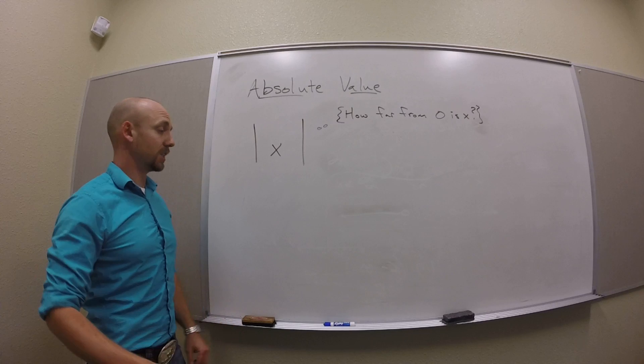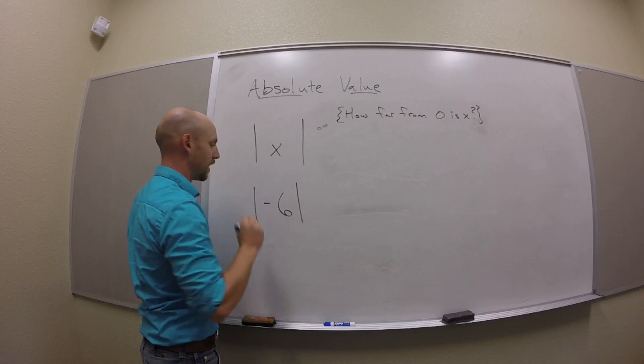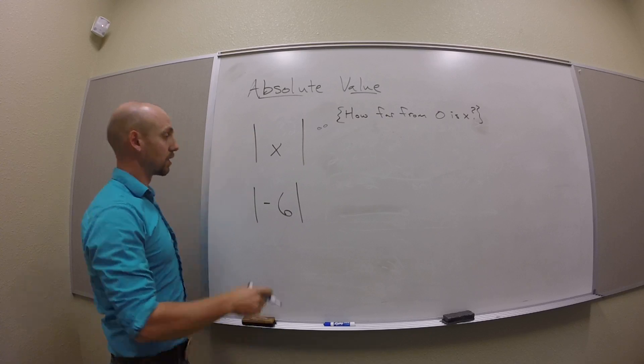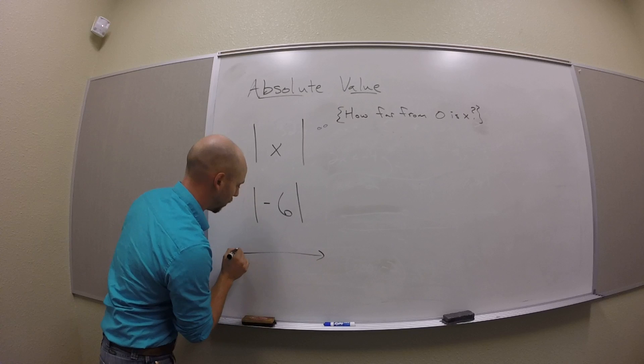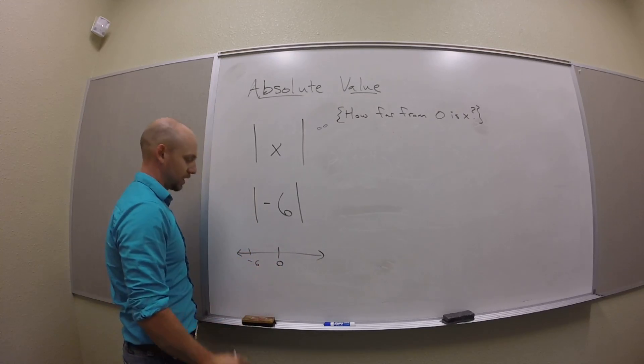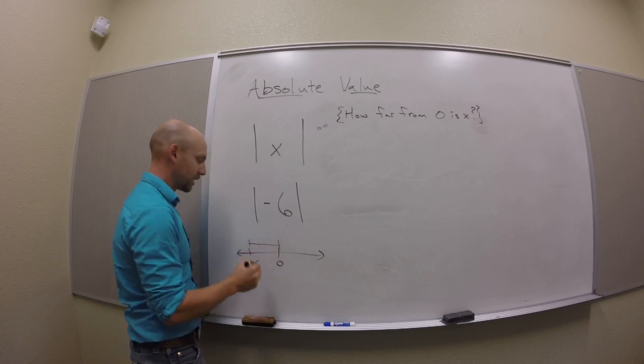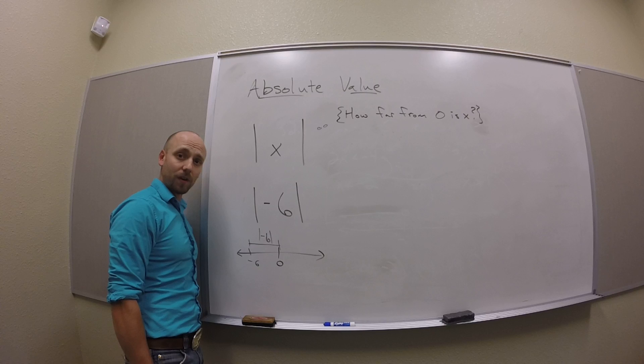For instance, if I told you that we were going to take absolute value of negative 6, you'd ask, how far from 0 is the number negative 6? So I might put 0 on a number line, I might find negative 6, and I might think to myself, what's this distance? That distance there is the absolute value of negative 6.